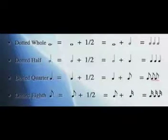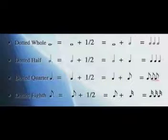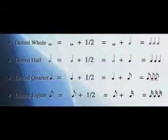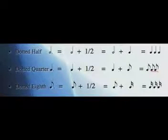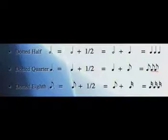If you take a look at this chart, a whole note with a dot is equal to a whole note plus half. Half of a whole note is a half note. Since there are two half notes in a whole note, plus that extra half note, it adds up to three half notes. Applying this same principle: a dotted half note equals three quarter notes, a dotted quarter note equals three eighth notes, and a dotted eighth note equals three sixteenth notes.